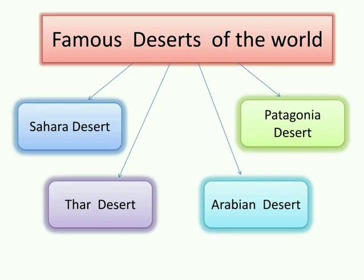Some of the famous deserts of the world are: the Sahara Desert, which is the largest desert in the world, located in the northern part of Africa; the Thar Desert, located in India; the Arabian Desert in Saudi Arabia; and the Patagonia Desert in South America.